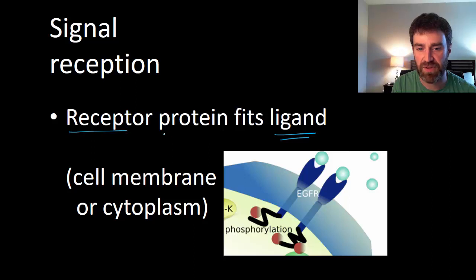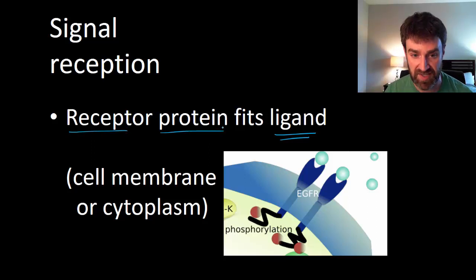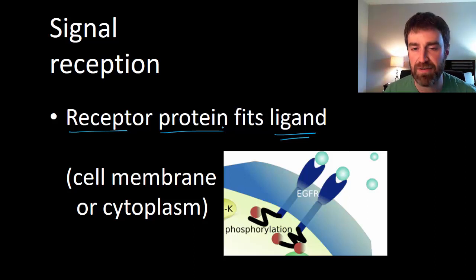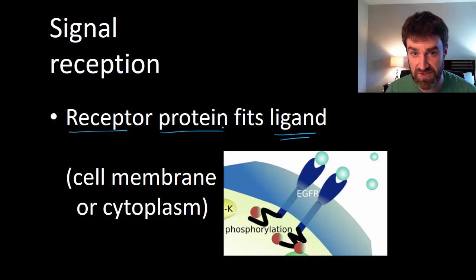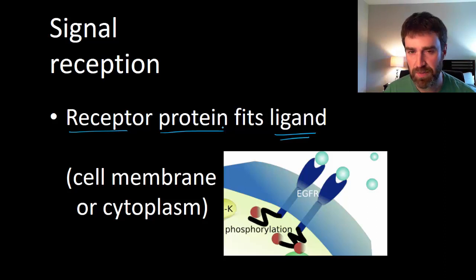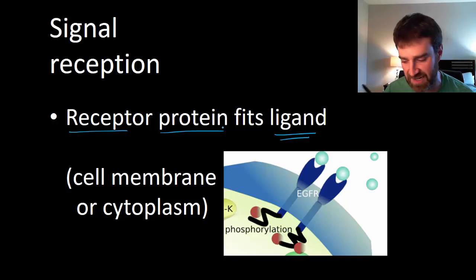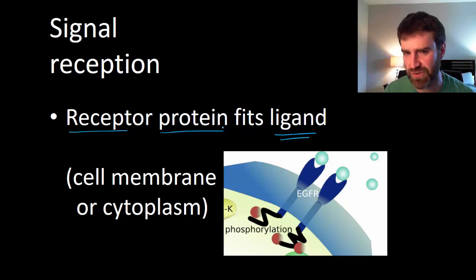Receptor proteins are another really important class of proteins to add to our list, alongside enzymes, transport proteins, and motor proteins. They're often found in the membrane of cells with their receptor sites facing out, and each receptor only binds to the ligand that fits it. Ligands don't have to be chemicals — sometimes they can be things like light waves in the case of photoreceptors. Receptor proteins might also be in the cytoplasm if the ligand is small and nonpolar, as with steroid hormones like testosterone.